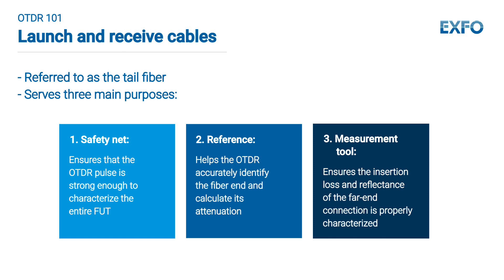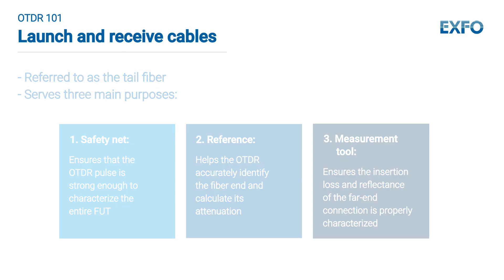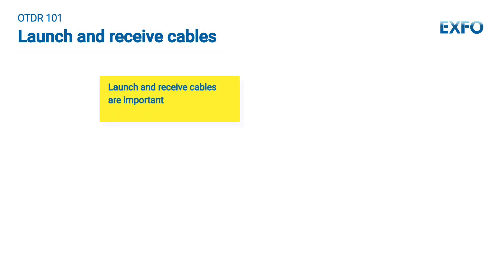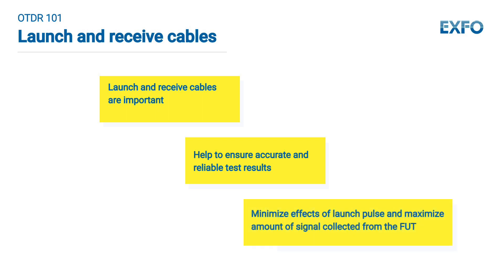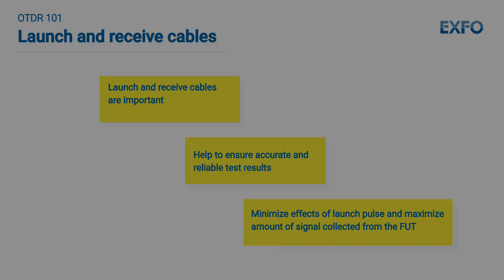Overall, using launch and receive cables in OTDR testing is important because it helps ensure accurate and reliable test results by minimizing the effects of the launch pulse and maximizing the amount of signal collected from the fiber under test.